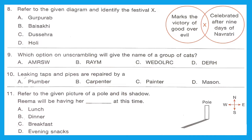Question 8: Refer to the given diagram and identify festival X. X marks the victory of good over evil and is celebrated after nine days of Navratri. It is Dussehra — option C — when Ram killed Ravan, marking the victory of good over evil, celebrated after Navratri.